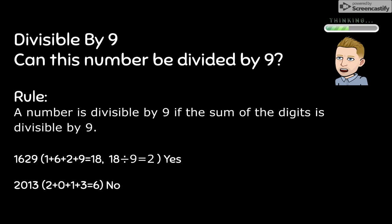Is a number divisible by 9? Let's check out the rule. A number is divisible by 9 if the sum of the digits is divisible by 9. So let's check this out. We've got to add all the digits in the numbers together and then divide that by 9.